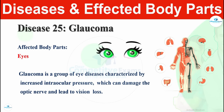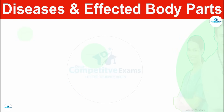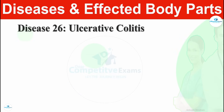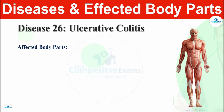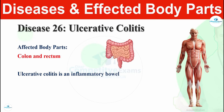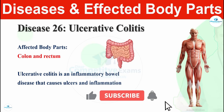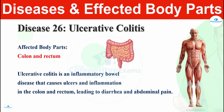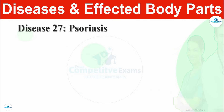Disease number twenty-six is ulcerative colitis. Ulcerative colitis affects the colon and rectum. Ulcerative colitis is an inflammatory bowel disease that causes ulcers and inflammation in the colon and rectum, leading to diarrhea and abdominal pain. Ulcerative colitis affects the colon and rectum.